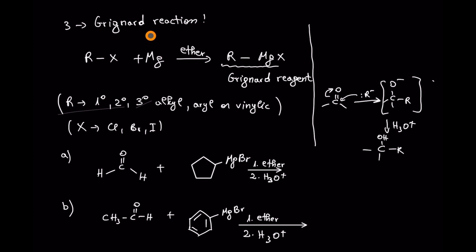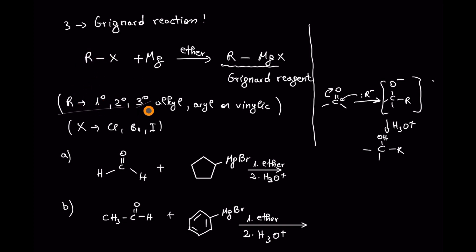Let's move to the third case: Grignard reactions. The Grignard reagent is an alkyl halide that is treated with magnesium in ether solvent to form the Grignard reagent. The mechanism is similar to hydride — a negative charge from the Grignard reagent attacks the carbon at the carbonyl group, forms an alkoxide, and after protonation in acidic medium we get an alcohol. Here, in difference from before, we also have addition of other carbons. R can be primary, secondary, tertiary, alkyl, aryl, or vinylic, and X can be chlorine, bromine, or another halogen.